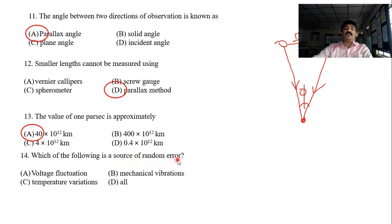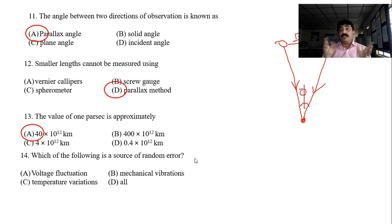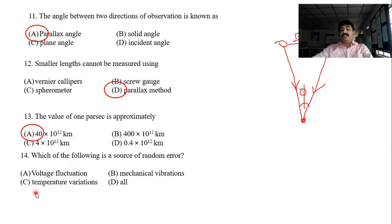Which of the following is a source of random error? Systematic error comes from the instrument. Random error comes from external conditions — voltage fluctuation, temperature variation, and mechanical vibrations. If there is an external error such as voltage fluctuation, temperature variation, or vibration, those are random errors. The answer is that all of these are random errors.